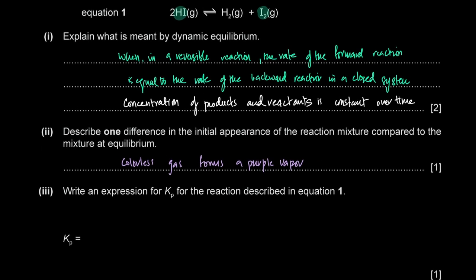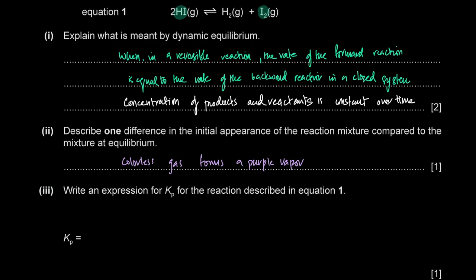Write an expression for Kp. Kp equals the partial pressure of products divided by the partial pressure of reactants. So: Kp = p(H₂) × p(I₂) ÷ p(HI)², because the stoichiometric coefficient for HI is 2 and for H₂ and I₂ is 1 each.